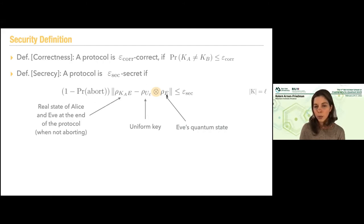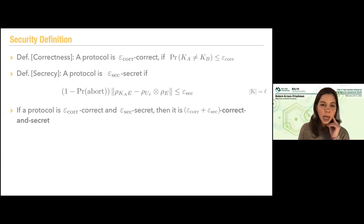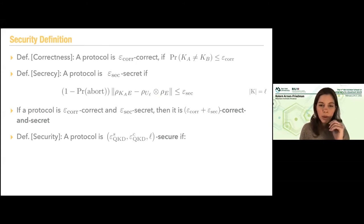This is the distance between the real and the ideal key, and we want this to be small. If this is small, it means we got these two systems to be close — it's hard to distinguish them. Now there is a statement: if a protocol is both correct and secret, then we can combine these errors and say it's ε_correct + ε_secret secure.